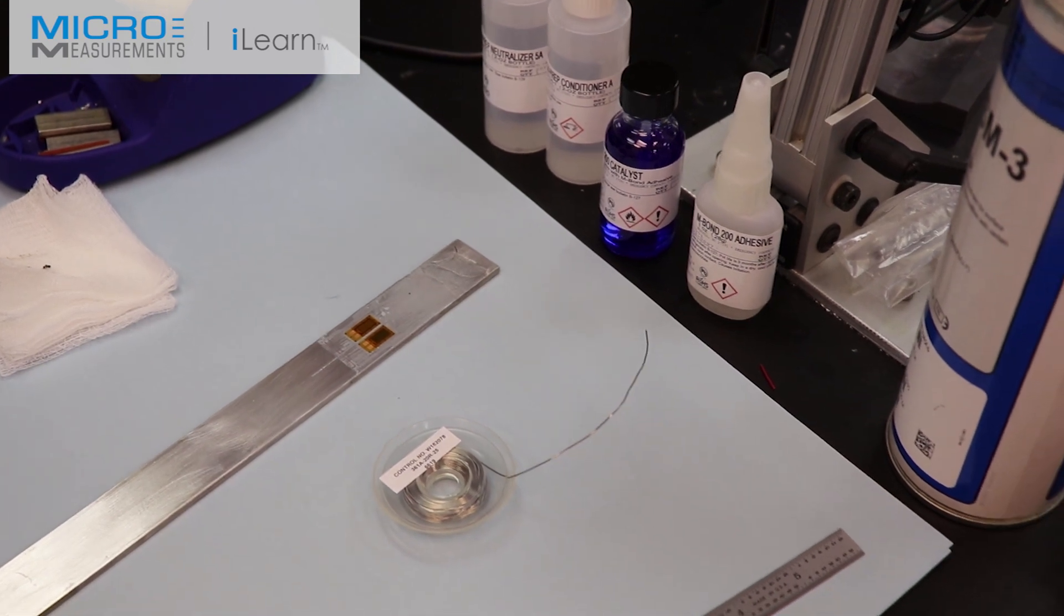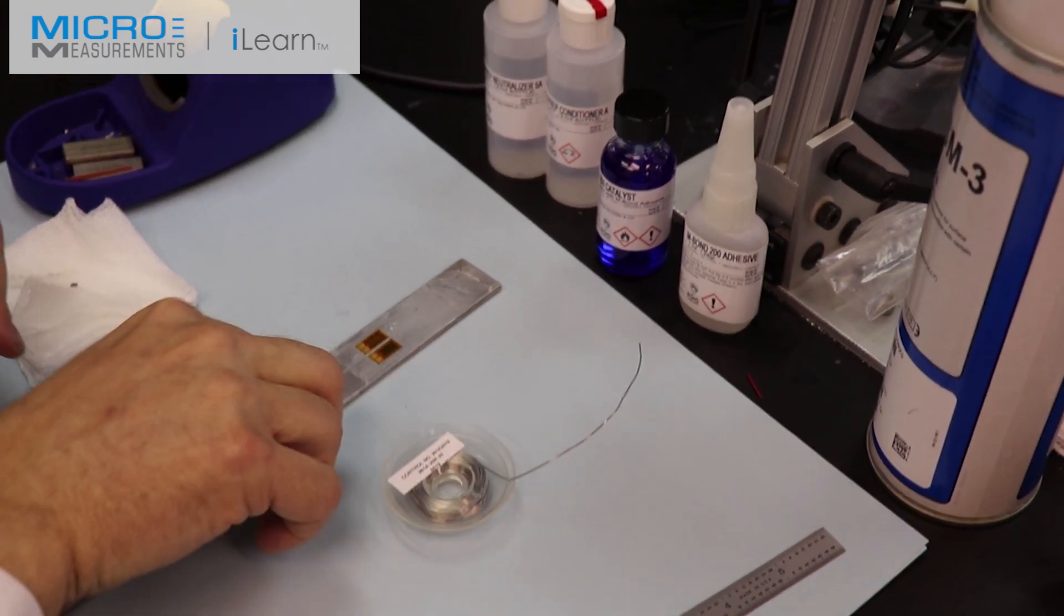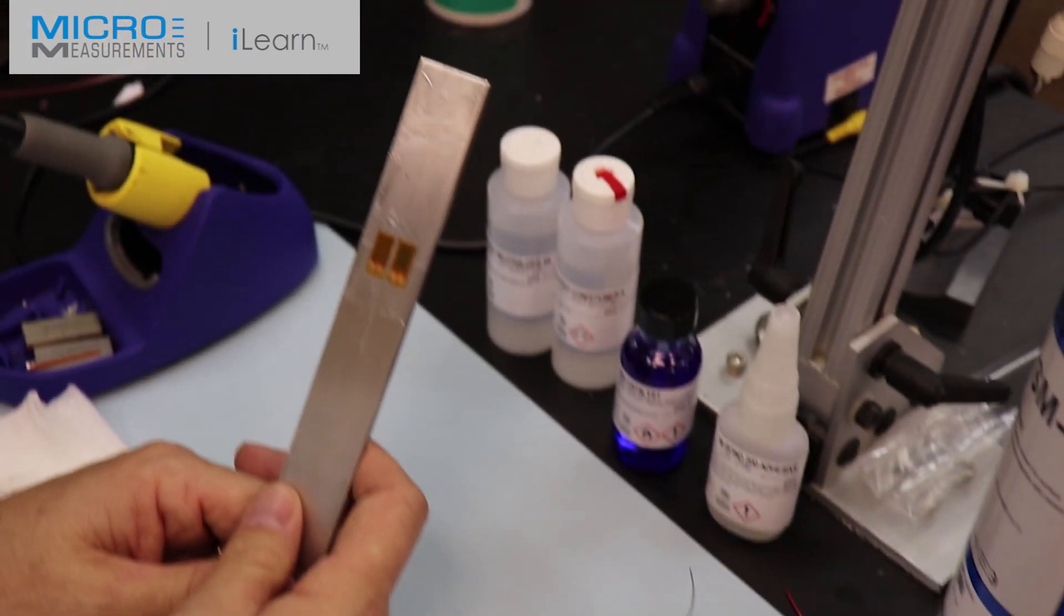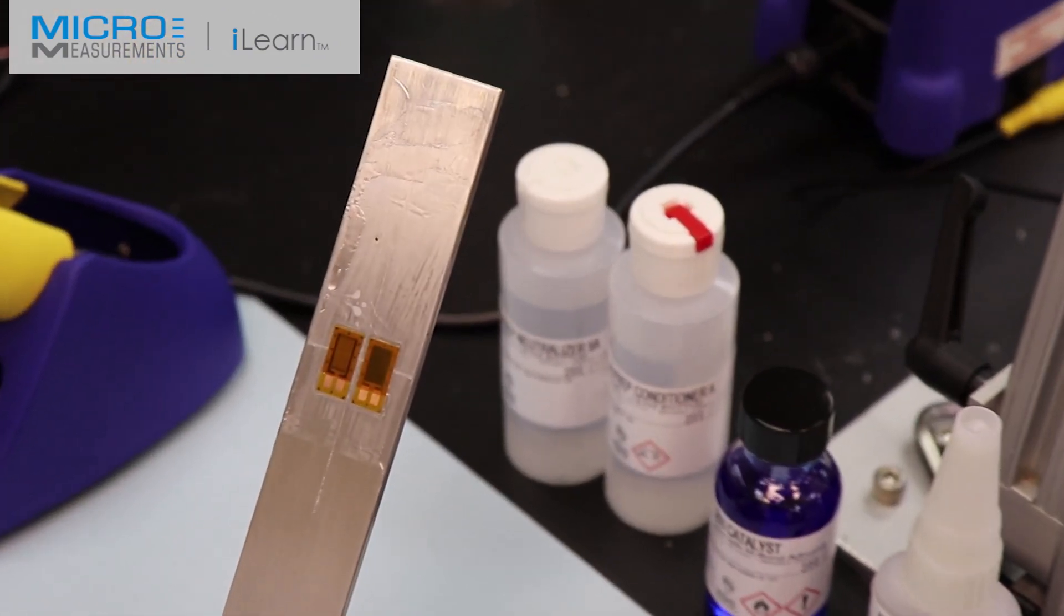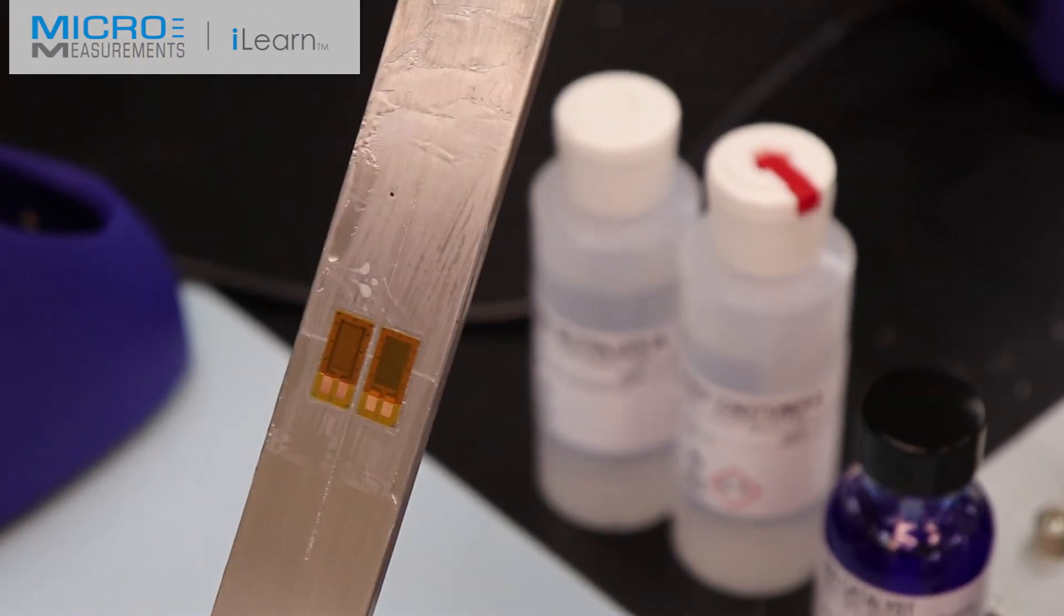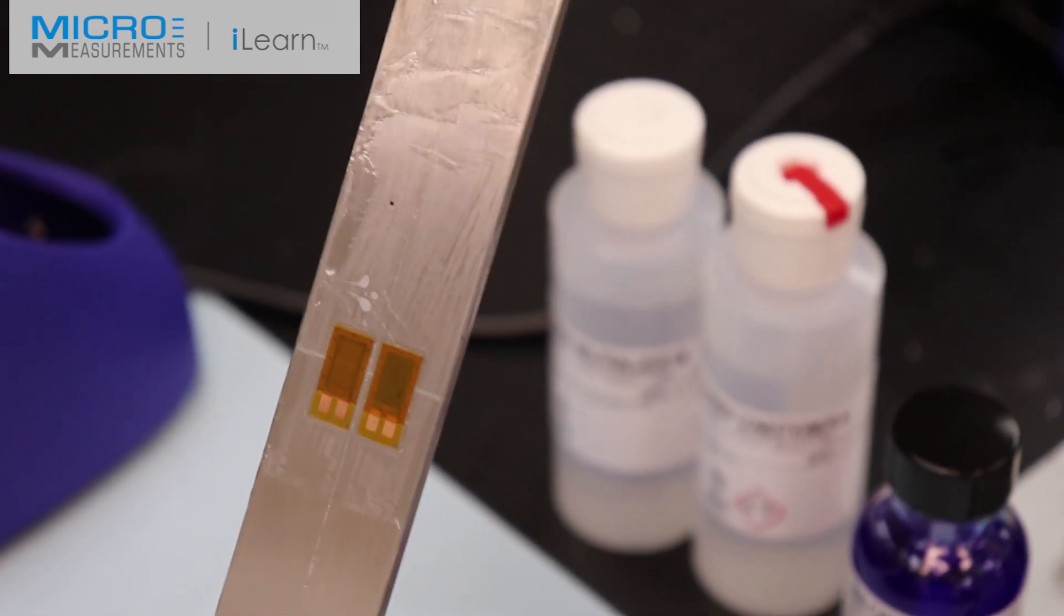And now's a good time for an optical inspection. Now we want to take a look at them. Did you get the gauges in the right spot? Does it look like they're down, evenly spaced in this case? And I think they look pretty good.